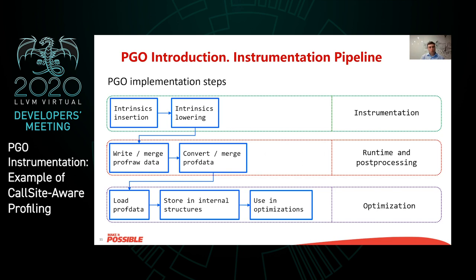We have additional information that allows us to make better decisions. However, we need to pass this information to optimizations and store it in some internal structures. We need to maintain those internal structures during optimizations between the final profile guided optimization and our point where we load this profiling data.